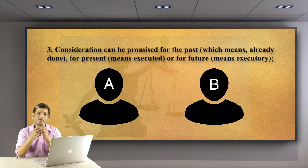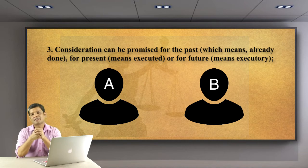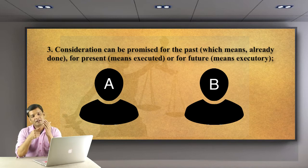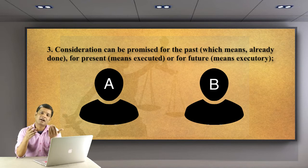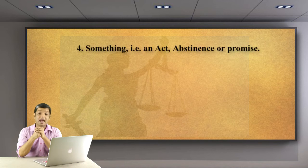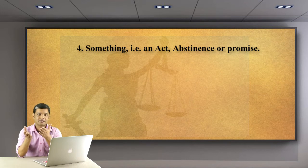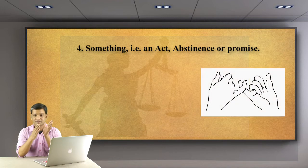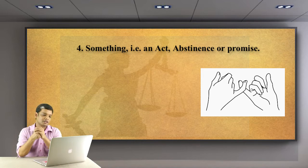For present consideration, there is of course no issue. For future consideration: you promise to pay 50,000 to buy your friend's car, paying 10,000 now and the rest — 40,000 — after a month. That is also valid. The last point of this definition is that consideration is an act, abstinence, or promise. Some act involved, abstinence means restraining from something, and a promise regarding the performance of a certain act is also considered valid consideration.